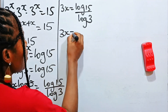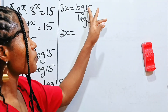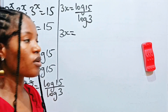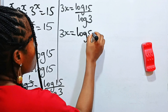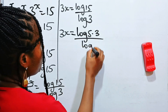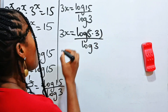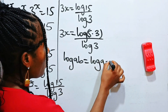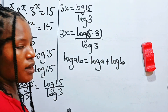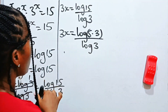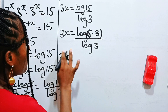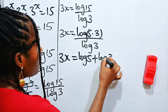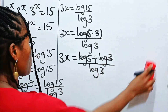So we have 3x is equal to — let us express 15 in terms of 3. 15 in terms of 3 is 5 multiplied by 3. So we have log(5 × 3) divided by log 3. Now, log(a × b) equals log a plus log b, so we can write this as 3x equals log 5 plus log 3, all divided by log 3.